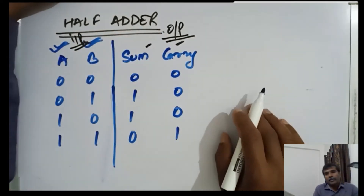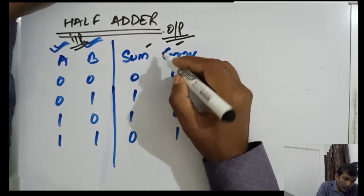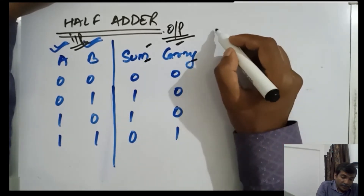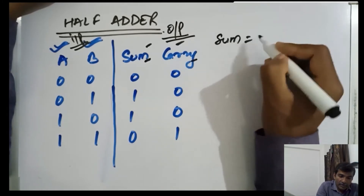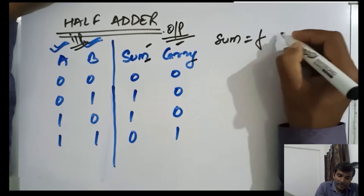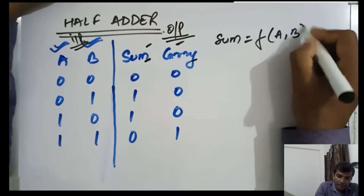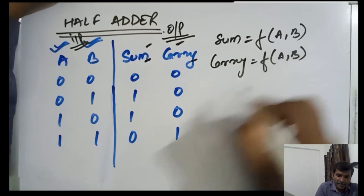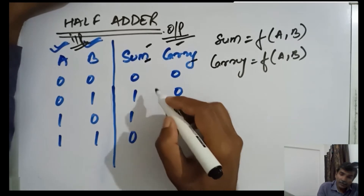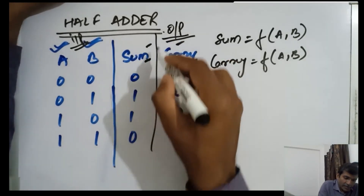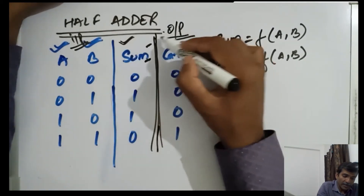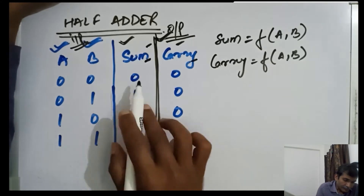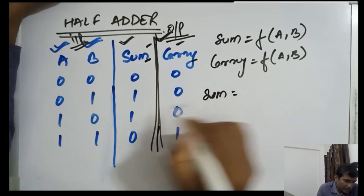In order to devise a logic, you first have to transform the outputs — sum and carry — as functions of the inputs. So you will have sum as a function of A and B, and similarly carry as a function of A and B. We transform into two separate functions because we have two separate output bits.